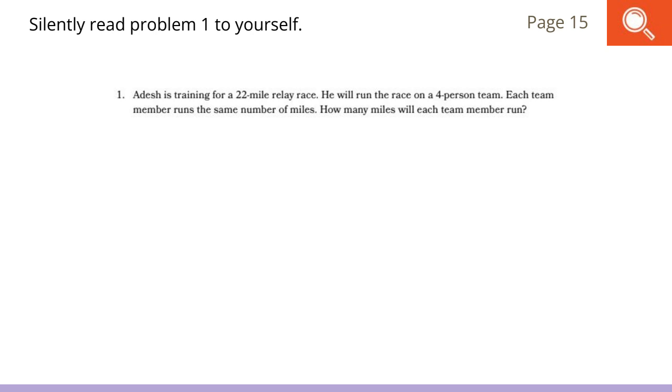Now let's do some of this work together in our math books. On page 15, we see that Adesh is training for a 22 mile relay race. He will run the race on a four person team. Each team member runs the same number of miles. How many miles will each team member run? Let's think about what is the whole amount being run. We have 22 miles. It tells us. And it tells us that he is on a four person team. So the 22 miles is split between four people. This would be a division sentence of 22 divided by four.